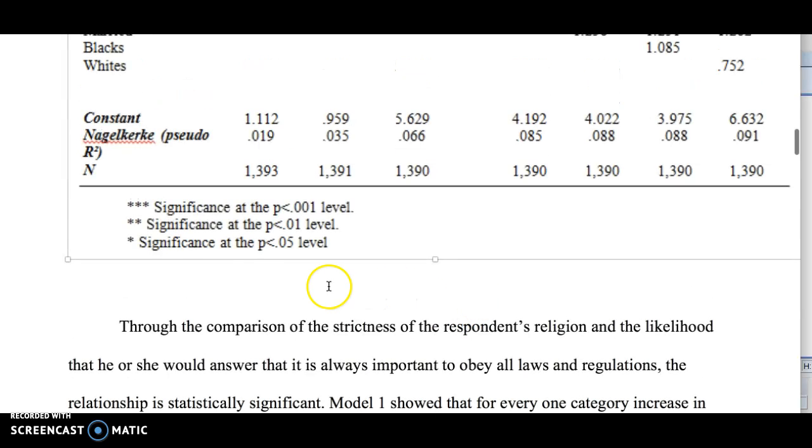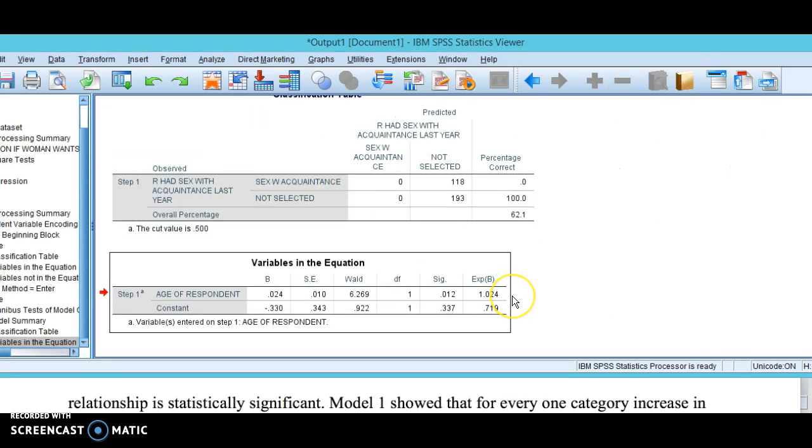This one would actually, if you're being conservative, just get one star. If you want to be a little more go-getter, you could give it two stars. But how would we interpret this 1.024? What does that actually mean in the equation?